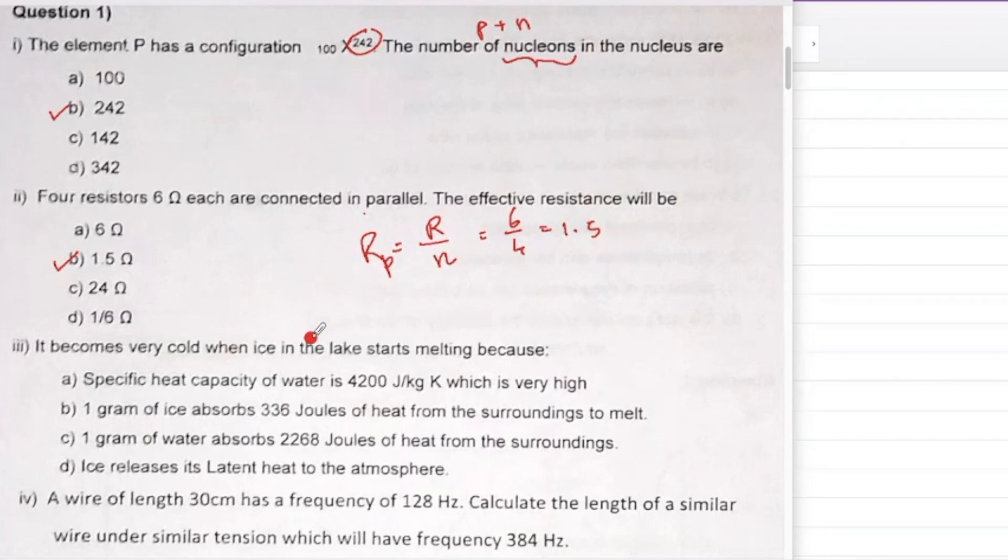It becomes very cold when ice in the lake starts melting because when it starts melting, the specific latent heat of fusion will be absorbed. So what will you say? One gram of ice absorbs 336 joules of heat energy from the surrounding to melt, correct.